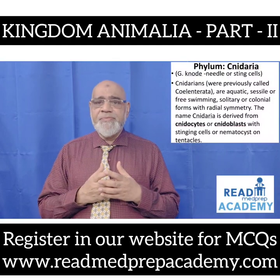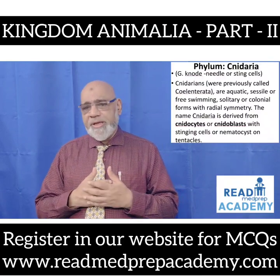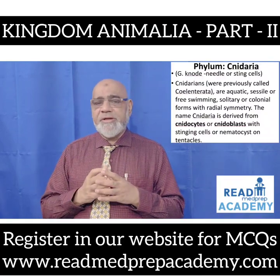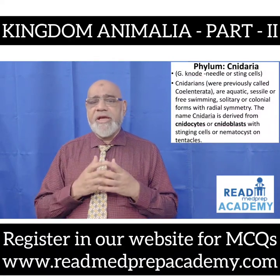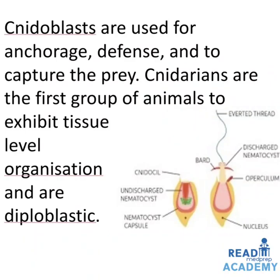Now let us move on to Phylum Cnidaria — a Greek word; 'knide' means needle or sting cells. Cnidarians were previously called Coelenterata. They are aquatic, sessile or free-swimming, solitary or colonial forms with radial symmetry. The name Cnidaria is derived from cnidocytes or cnidoblasts with stinging cells or nematocysts on tentacles. Cnidoblasts are used for anchorage, defense, and to capture prey. Cnidarians are the first group of animals to exhibit tissue level of organization and are diploblastic.